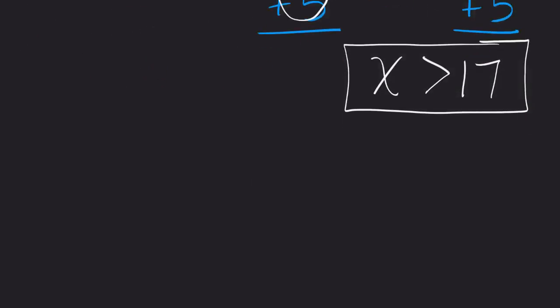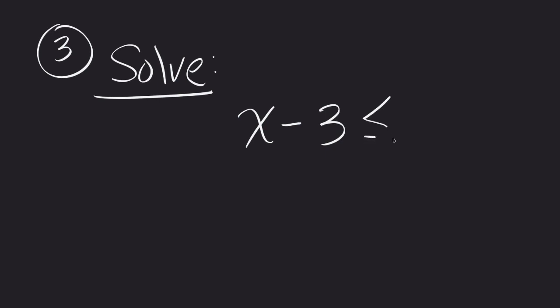So one more, just so you can sort of see the last details here. Let's try one where we say, what if I gave you x minus 3 less than or equal to 10? Still an inequality. Still follows the same property. How do I get the x by itself? I'm going to add the 3 to both sides.